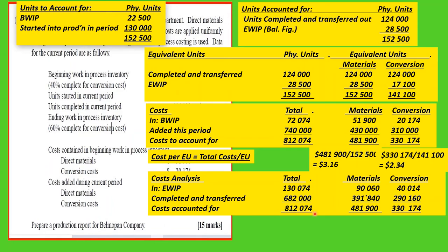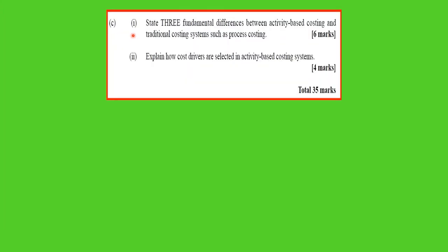If you did not catch all of that in one viewing, you can rewind and watch again — it typically takes more than one pass to fully understand process costing. The next part of the question asks us to state three fundamental differences between activity-based costing and a traditional costing system such as process costing, for six marks.